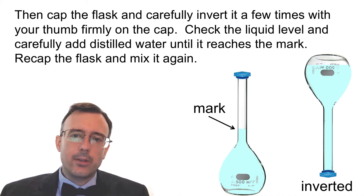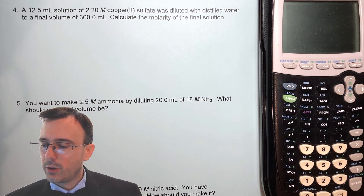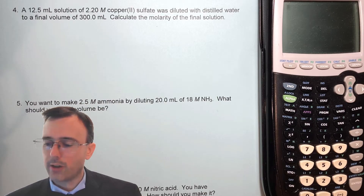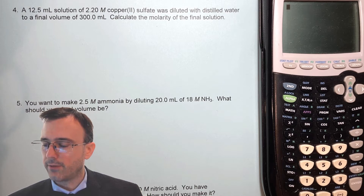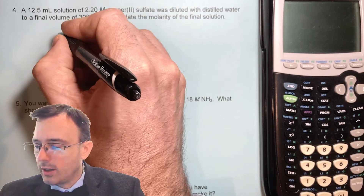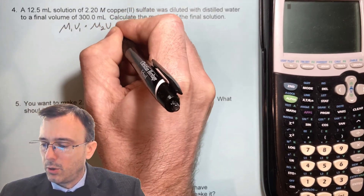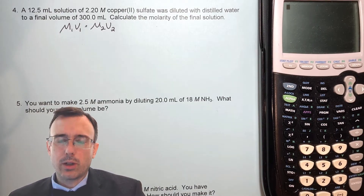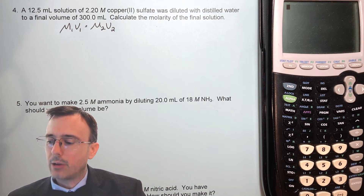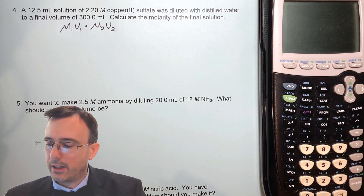Let's try a few problems to see how this works. A 12.5 milliliter solution of 2.2 molar copper(II) sulfate was diluted with distilled water to a final volume of 300 milliliters. Calculate the molarity of the final solution. We're going to use the equation M1V1 equals M2V2, and we're solving for M2, the final molarity.